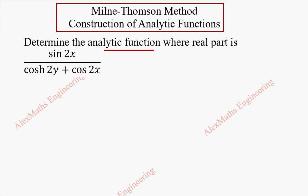So from this u, that is u is given as sin 2x whole division cosh 2y plus cos 2x. Let's find its partial derivative with respect to x first using the quotient rule.